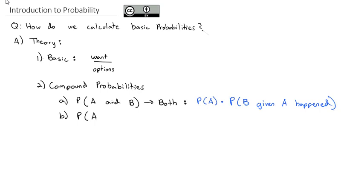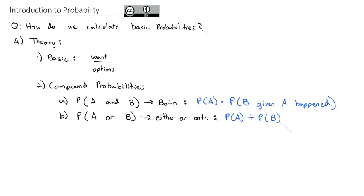The next option is the probability of A or B — that's the probability of either or both. I might be interested in the probability that it's sunny outside or above 80 degrees; it's okay if it's cloudy as long as it's above 80 degrees, or sunny even if it's cold, or both. The way we calculate an or probability is we take the probability of the first one and add the probability of the second one, but then we subtract the probability of A and B so we don't double count.